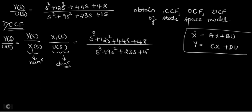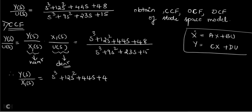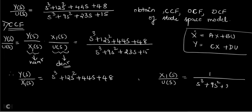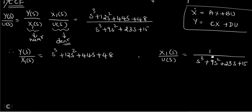So Y(s)/X1(s) equals the numerator: s³ + 12s² + 44s + 48. And X1(s)/U(s) equals 1 divided by the denominator: s³ + 9s² + 23s + 15. If you multiply these two terms together, you get back the original transfer function. Always take Y/X1 as numerator and X1/U as denominator for all problems.